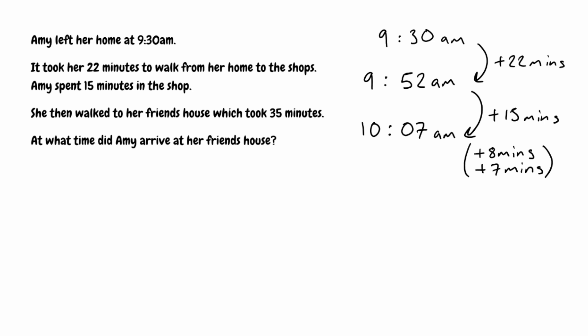For the final bit, we're told she walked to her friend's house, which took 35 minutes, so we need to add on those 35 minutes. We're still going to have 10 in the hour column, so we add 35 onto the 7, which gives us 42. So Amy would arrive at her friend's house at 10:42am.